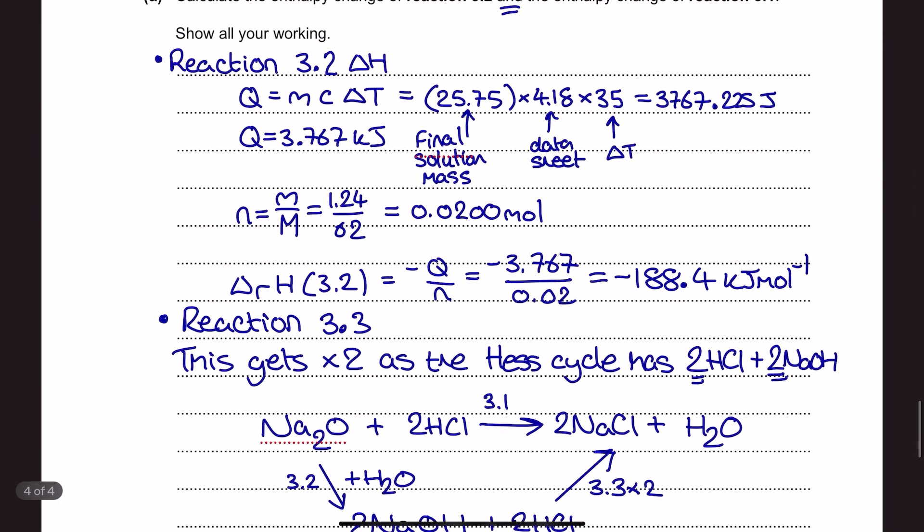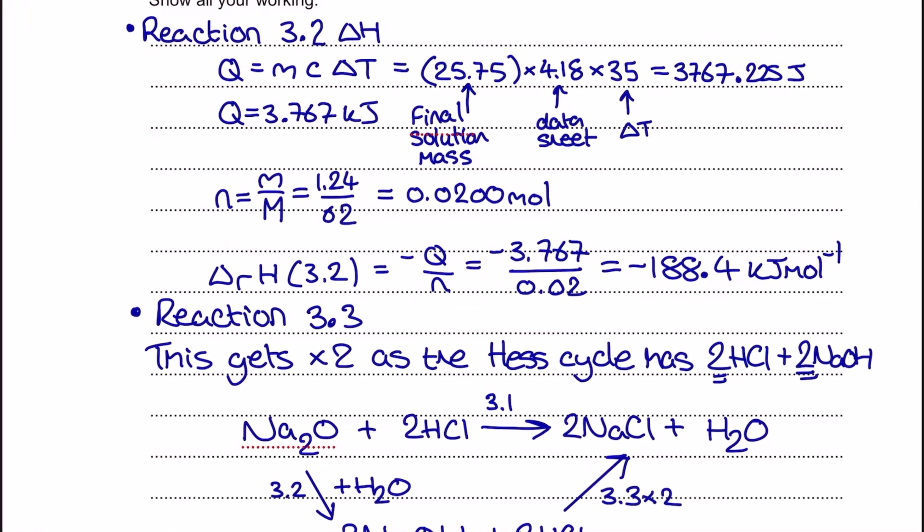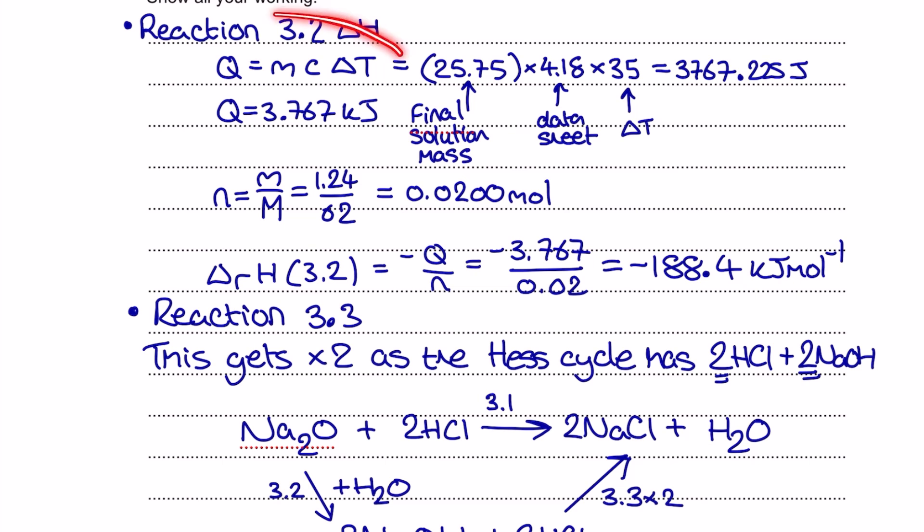Let's have a look at how I analyze the data. Here is my reaction 3.2 analysis so this is my calorimeter work. I start off with q equals mc delta t. I've got my final solution mass here of 25.75. OCR did introduce some clarity when it comes to the q equals mc delta t calculations and they said that whenever this is a solution so a direct method you may have this described as in your notes somewhere they will expect you to use the final solution mass here and they will provide you with that information. I've got the 4.18 from my data sheet and my delta t by analyzing the data in the question is 35.